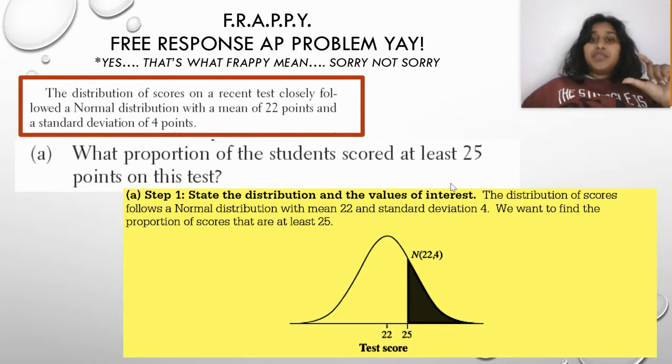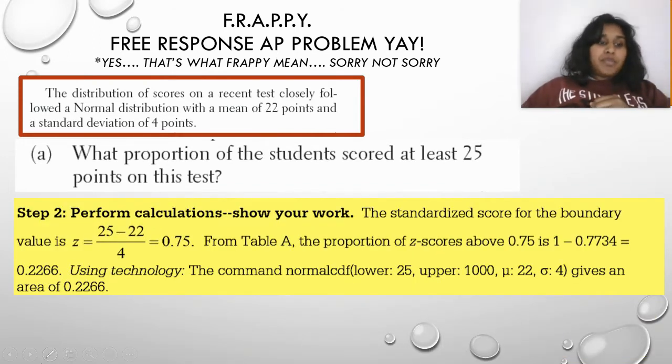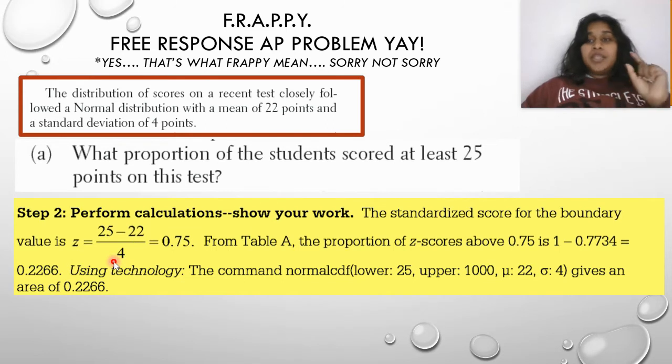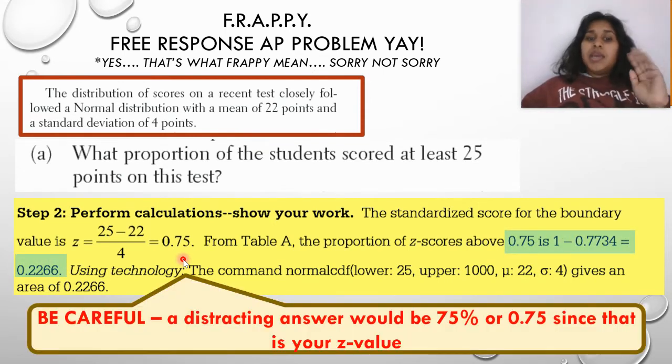I haven't done the math itself. To finish this off, I'm going to have to convert my raw score of 25 points to my Z score. So I use my formula. I'm going to grab my laser pointer. So I use my formula of 25 minus 22. So the observed minus the expected over the standard deviation or the error. And I get 0.75.